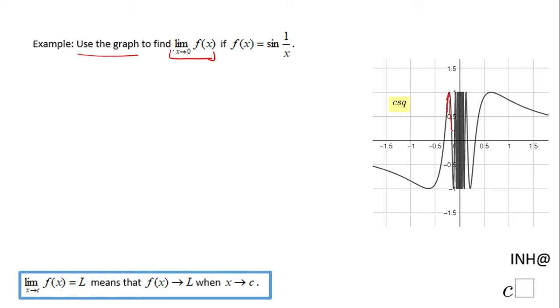You notice that the function goes down here, then goes back up, goes down again, goes back up. It's very complicated to see if there is any value that the function is getting closer to when we approach zero. In fact, it does not.